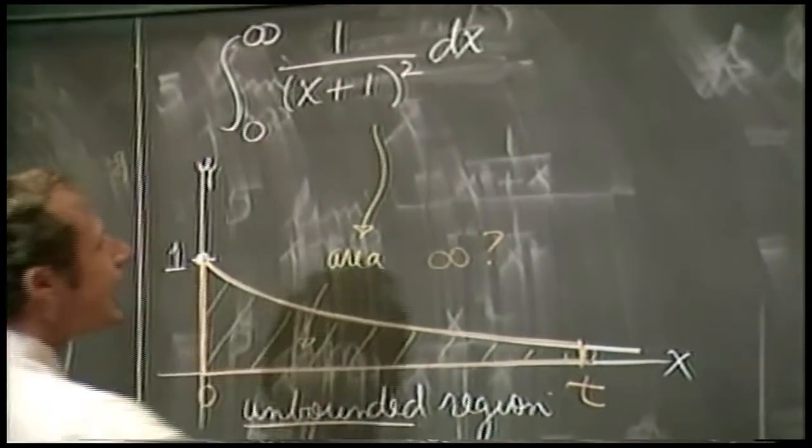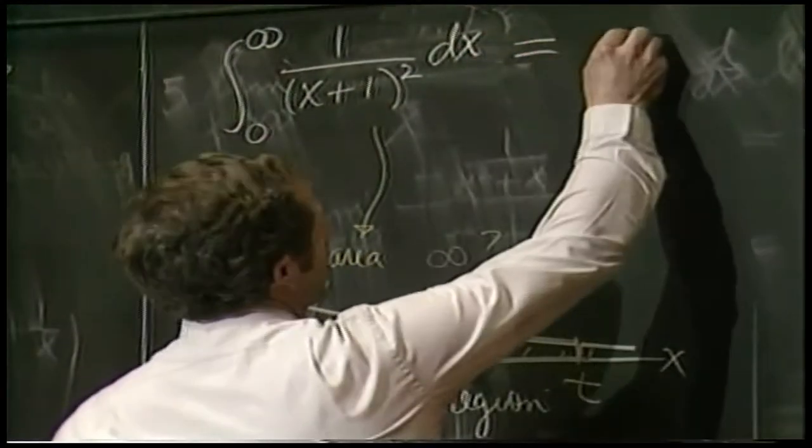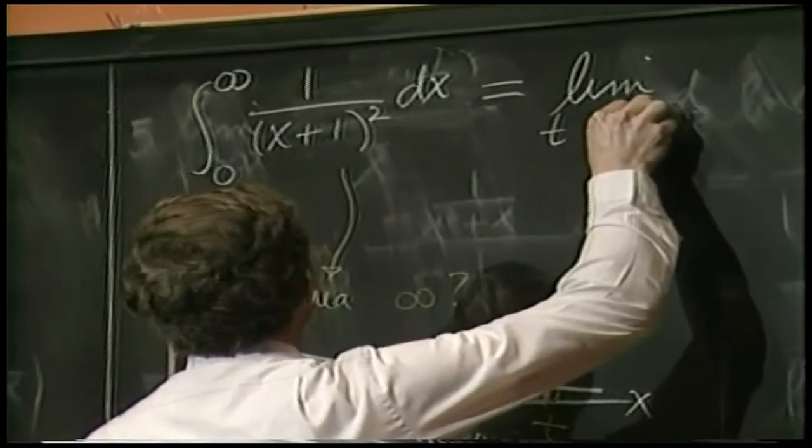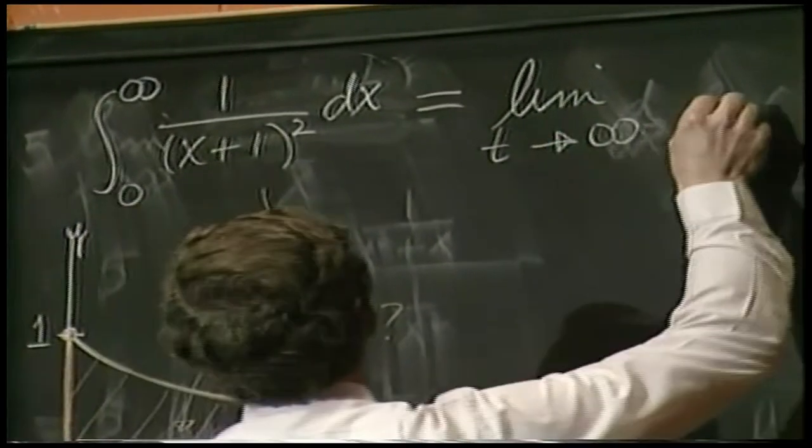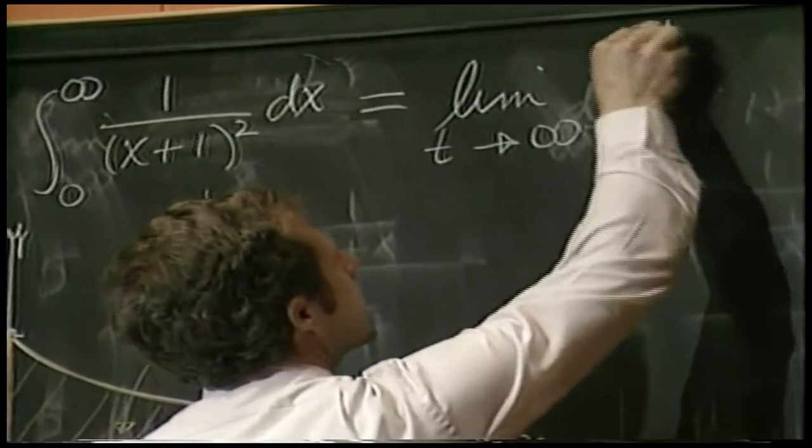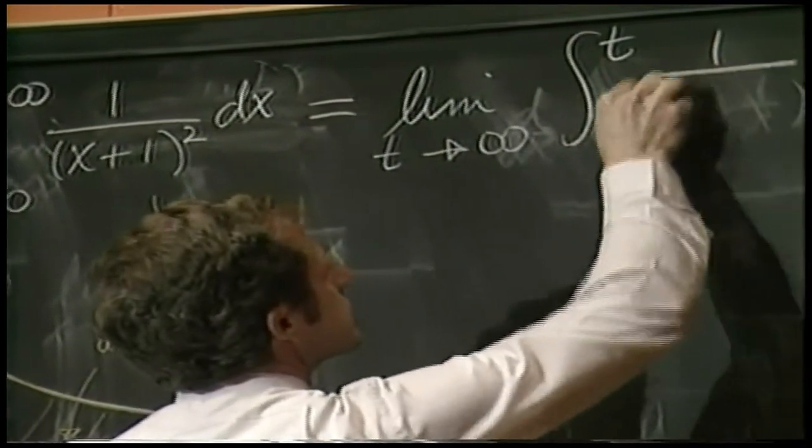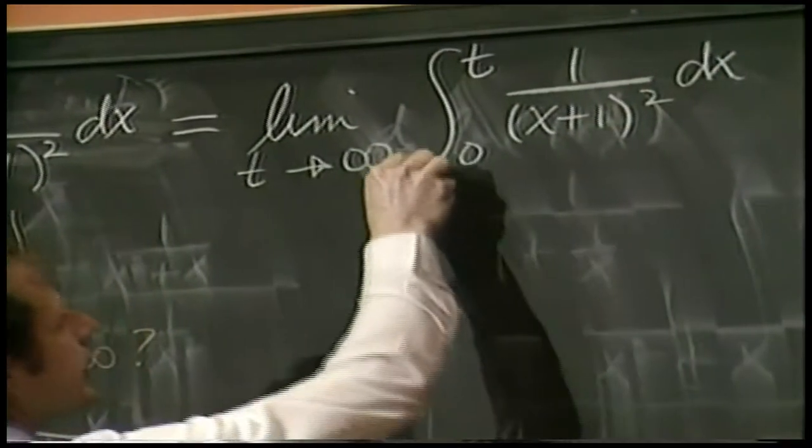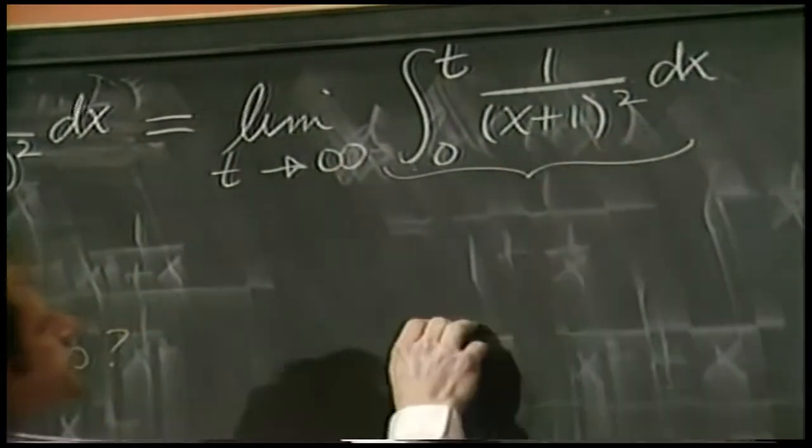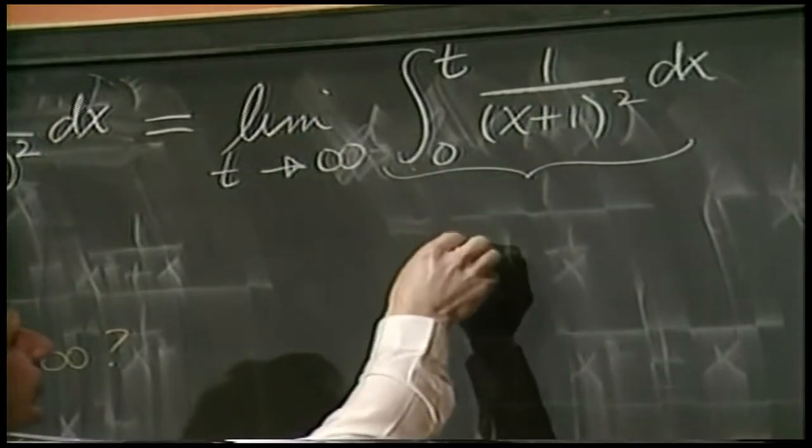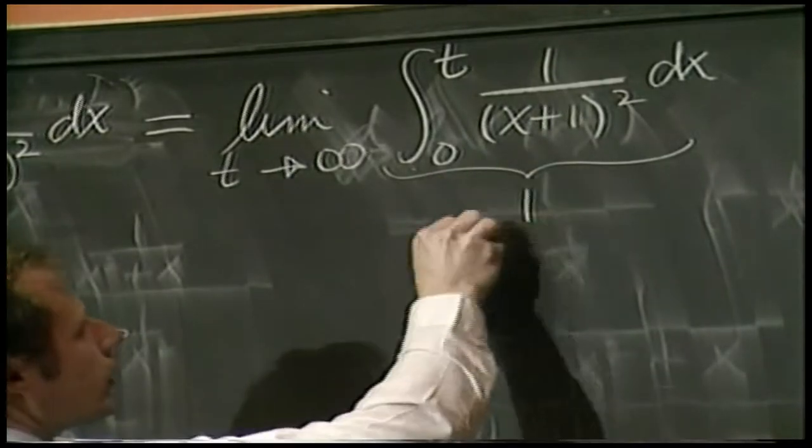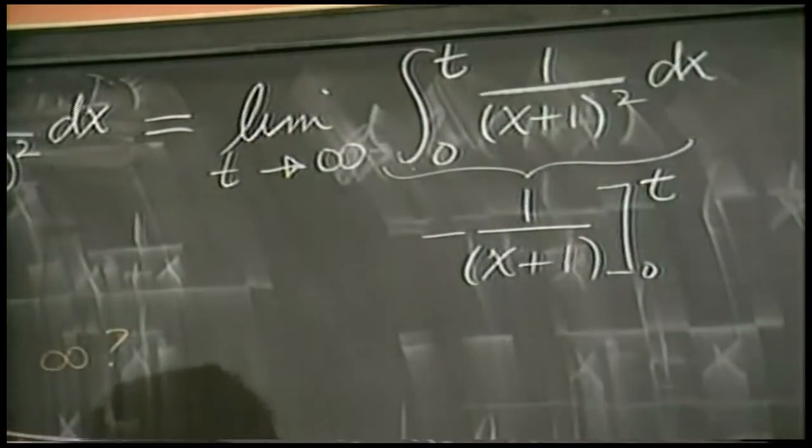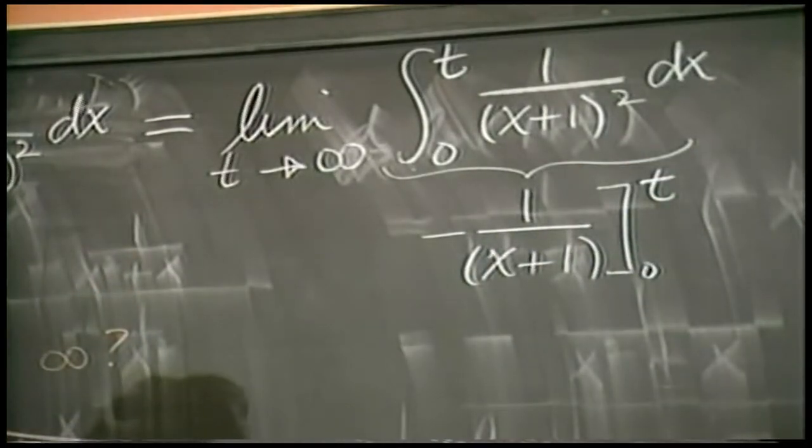So with that kind of as a philosophy, I guess, it will be a definition shortly. The problem then comes down to taking a limit as T goes to infinity of this thing here. And this thing we can evaluate. That's no problem. I'll kind of do it in my head for you. It's a minus one over X plus one from zero to T. That's what the evaluation of that integral is.